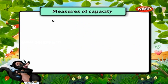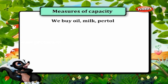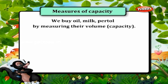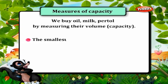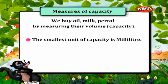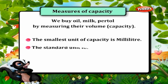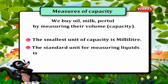We buy oil, milk, and petrol by measuring their volume or capacity. The smallest unit of capacity is milliliter. The standard unit for measuring liquids is liter.